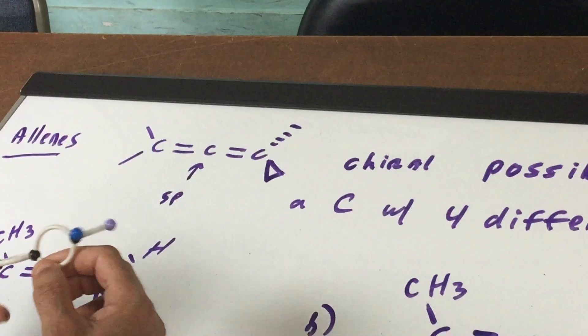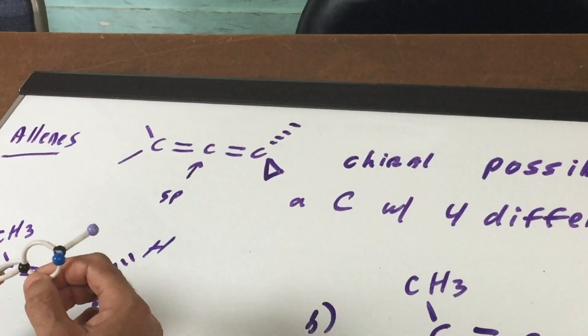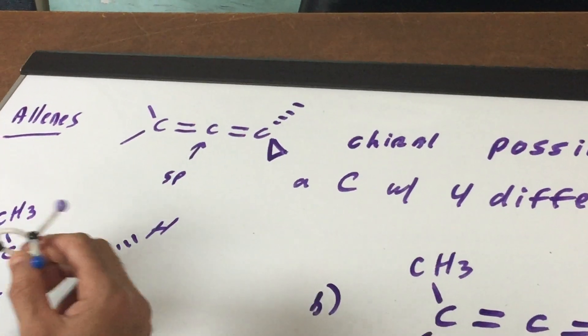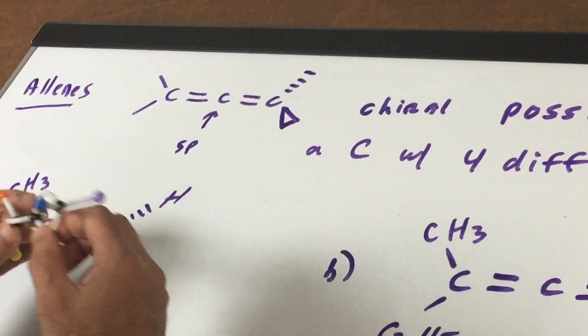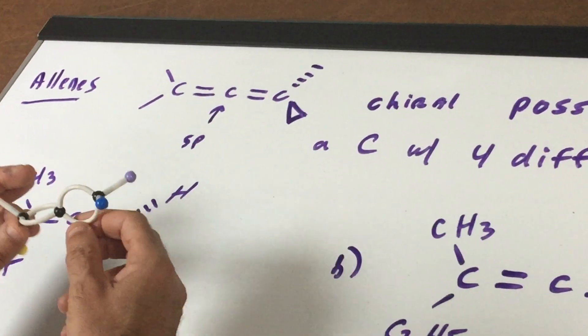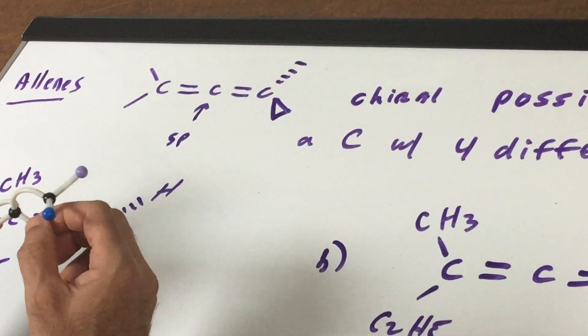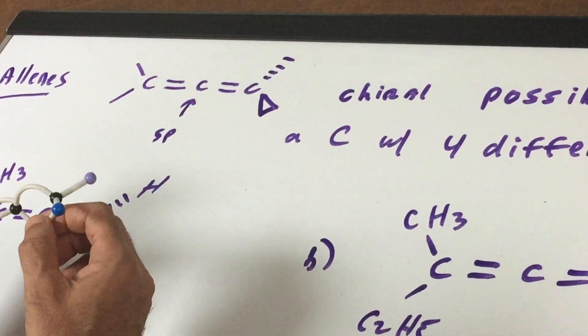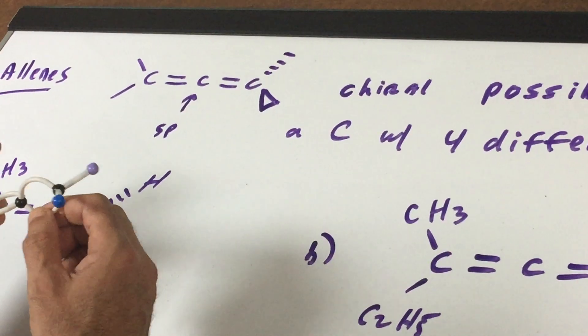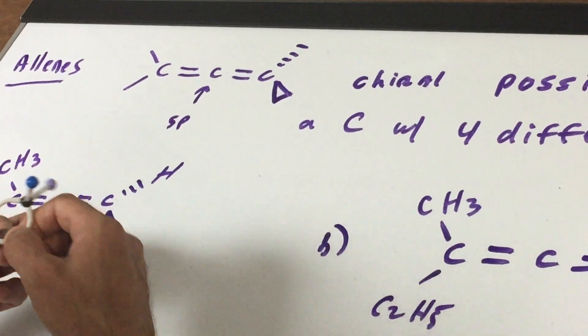So I'm hoping you can all see this that these this end and this end are in different planes. Now you might say well what does that mean they're in different planes? That means that the potential for chirality looms. Now even though there's no carbon with four bonds it is possible to have a chiral carbon or a molecule I should say it is possible to have a molecule that's optically active.